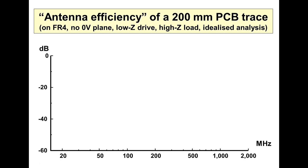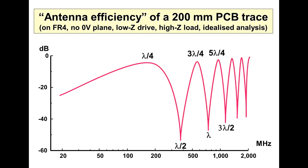Let's look at the other side of the coin — the antenna side. What is it that couples those noises, those signals to the air? Here's a 200 millimeter long printed circuit board trace — an idealized situation, just a trace on a piece of FR4 in free space, driven by a low impedance with no load at the end. We can see it resonates at quarter waves. This is the antenna efficiency in dBs — around zero dBs, meaning it's basically radiating into the air all of the energy in the trace at that frequency, which means very little of the energy at that frequency gets to the other end.